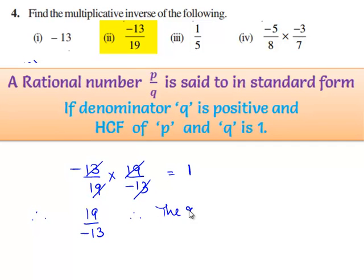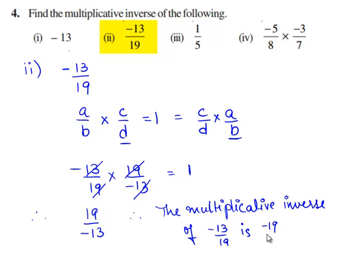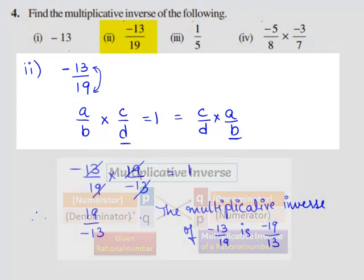the multiplicative inverse of minus 13 by 19 is minus 19 by 13. If we observe clearly, the multiplicative inverse of the given number is obtained by switching the numerator and denominator. Thank you.